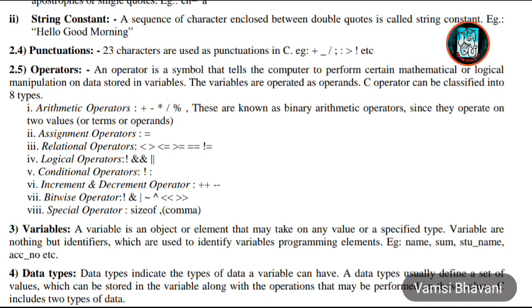Next are special operators. Special operators are operators that we don't apply in the real world, but are created in a programming language for user convenience. For example, sizeof or comma. For example, with sizeof: printf the size of b, where b is an integer type. This will print the size — how many bytes of memory variable b is taking — and display it.